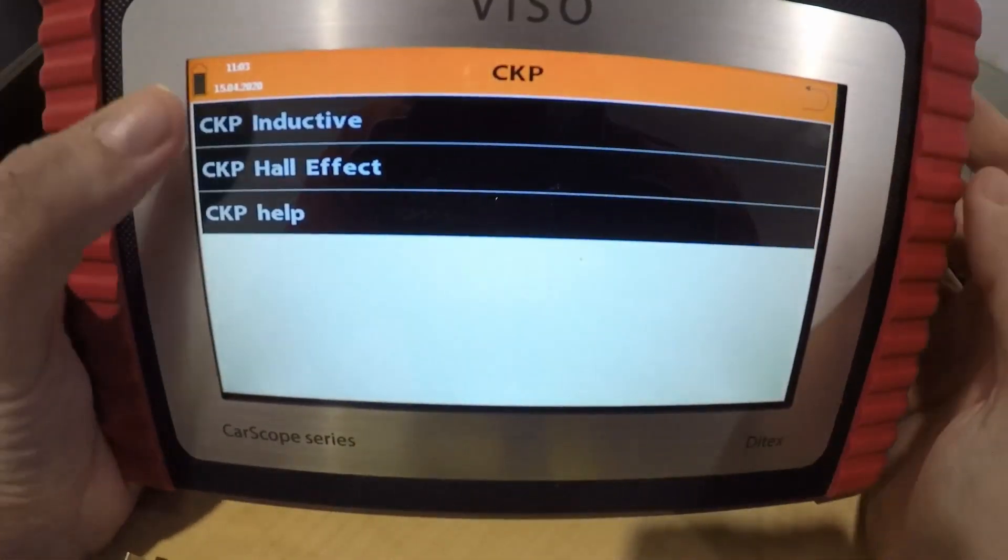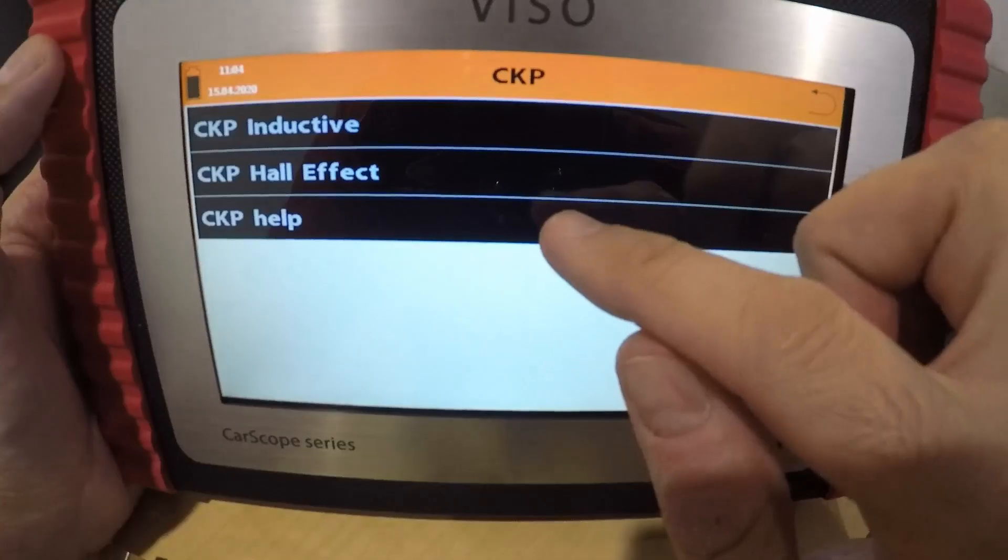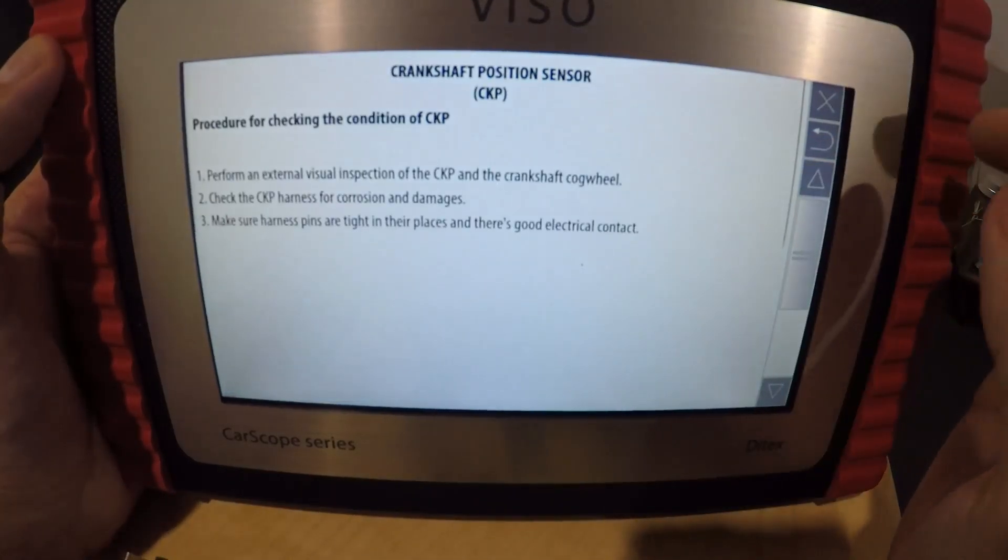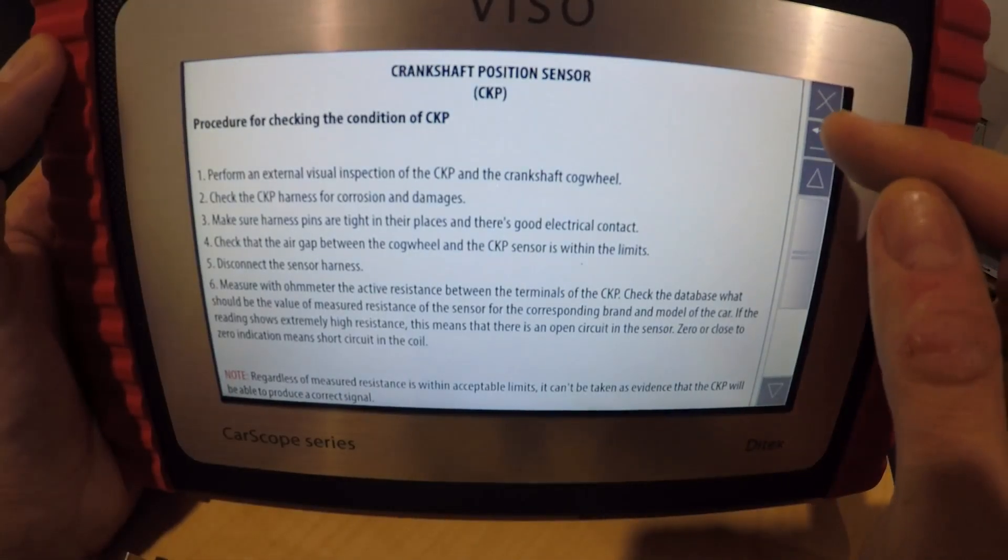Crank position sensor, let's go Hall effect. So that's all set up. CKP help, let's have a look. Procedure for checking the CKP. Very simple.